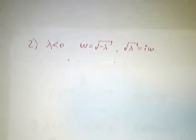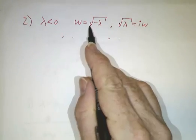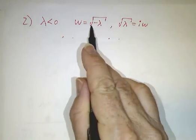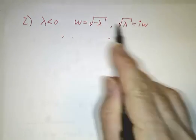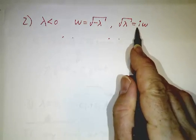If you have an eigenvalue that's negative, then we define a frequency to be the square root of minus the eigenvalue. So if this is negative 4, the frequency would be square root of 4 or 2. In other words, the square root of the eigenvalue is an imaginary number, i omega.